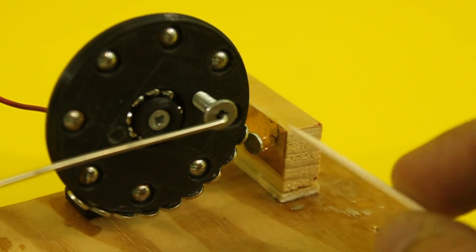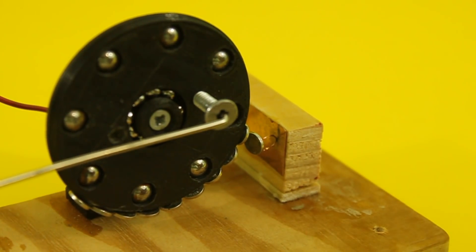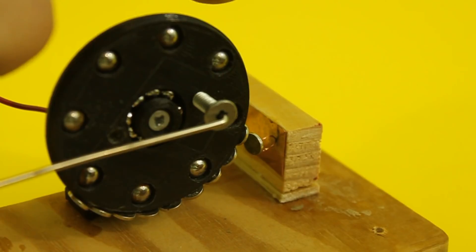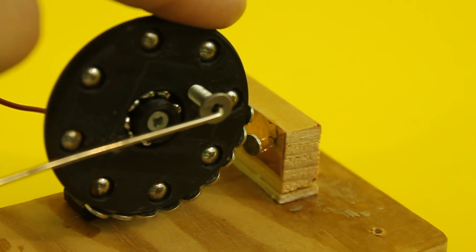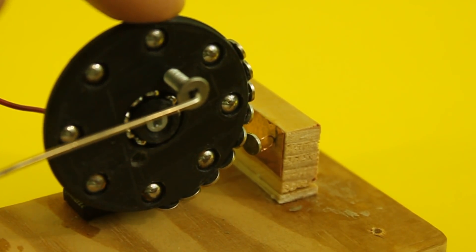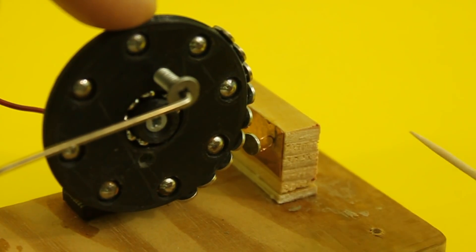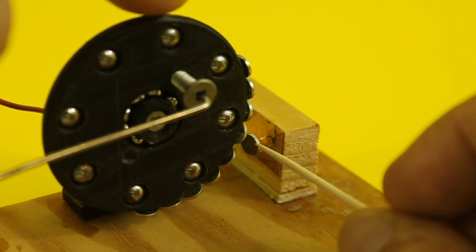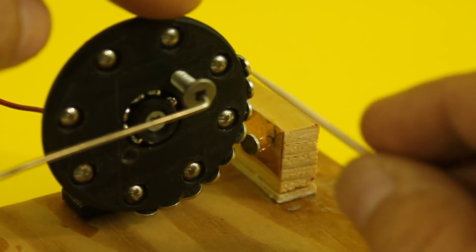The switch closes and then the solenoid is energized and the flywheel will move in this direction. The solenoid will be energized as long as the switch is closed.